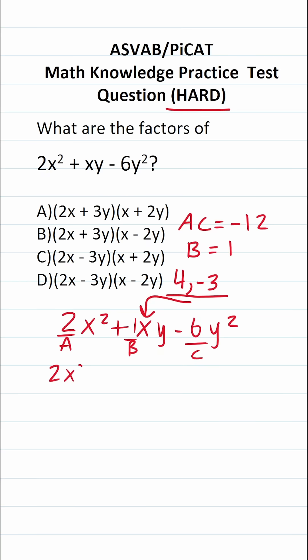This becomes 2x squared plus 4xy minus 3xy minus 6y squared. So as you can see, I just rewrote that middle term with 4 and negative 3 respectively.